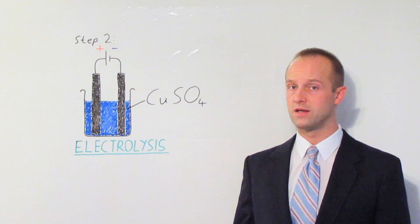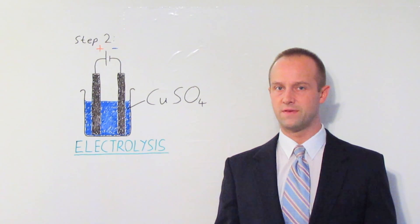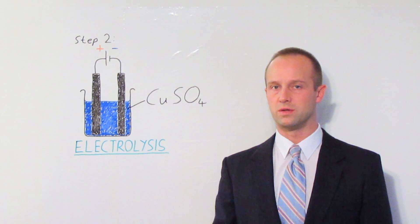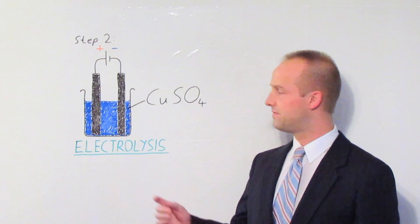The second step in the purification of copper is something called electrolysis. Now while smelting is difficult to do practically in a school lab because it requires very high temperatures, electrolysis is something which you probably will do as part of your GCSE course. And the way you're most likely to see it is in this form.